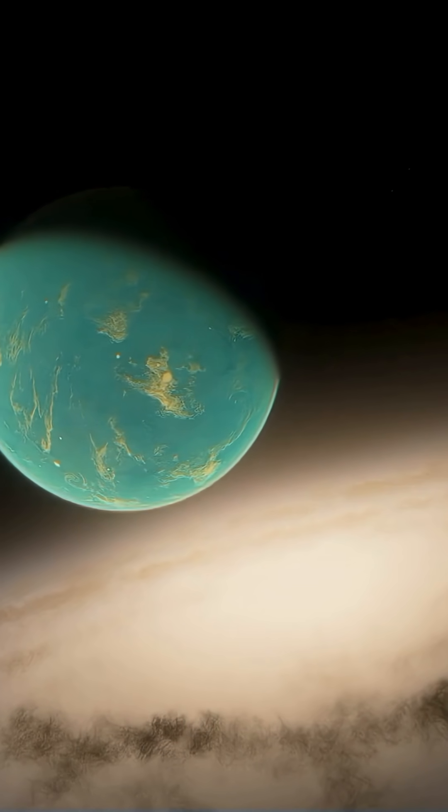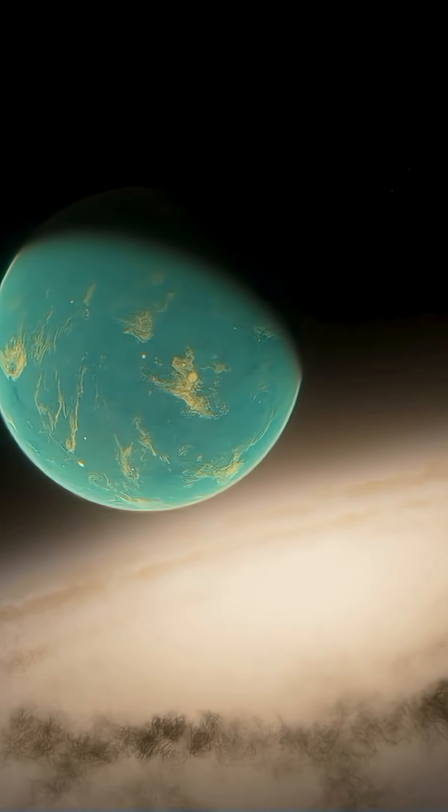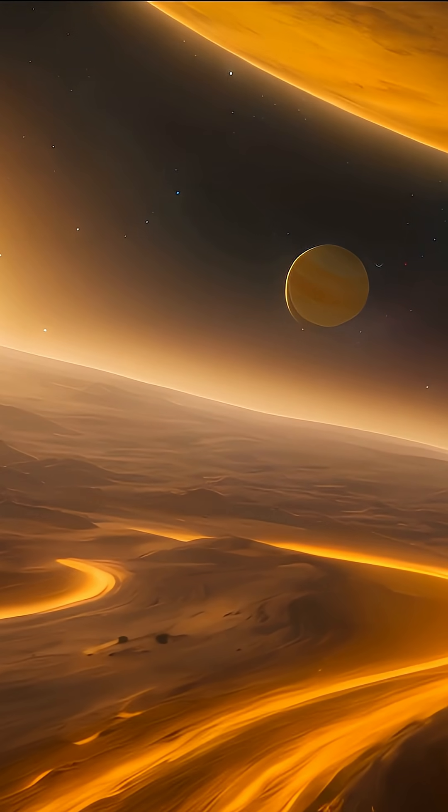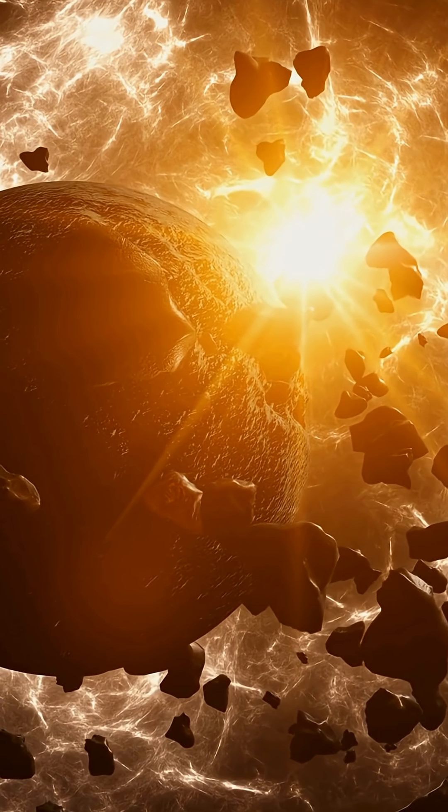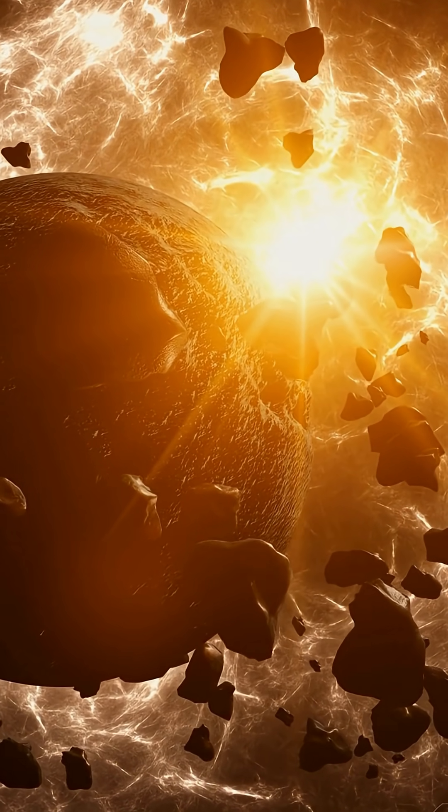But this planet, nine times the mass of Jupiter, is forming far from its star, about 93 astronomical units away, three times farther than Neptune is from our Sun, and it's forming in a strange way, from the outside in.